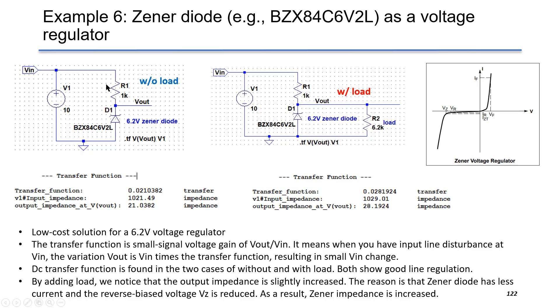the variation at Vout is simply the change at Vin times the small transfer function, resulting in a much smaller Vout change. This means Vout is less sensitive to the variation at Vin. This is what we want for a good voltage regulator.